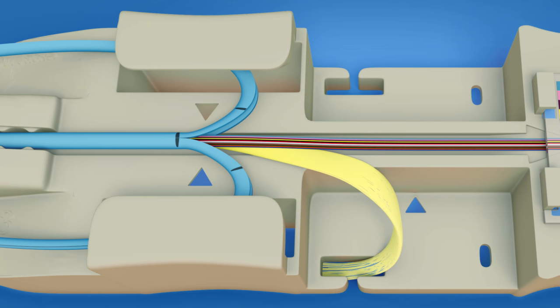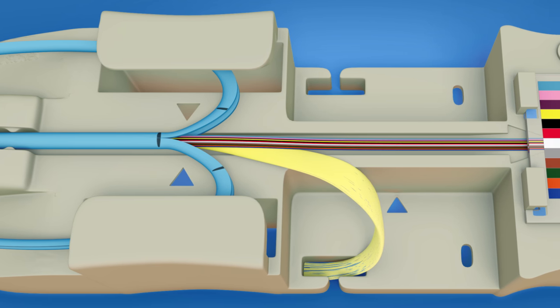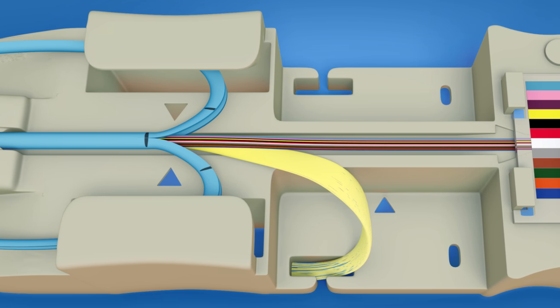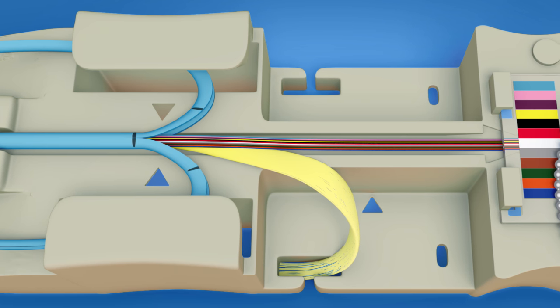Secure the cordage to the ribbonizing tool with the slit jacket mark at the first set of arrows. Set aside the aramid yarn on the side of the tool.